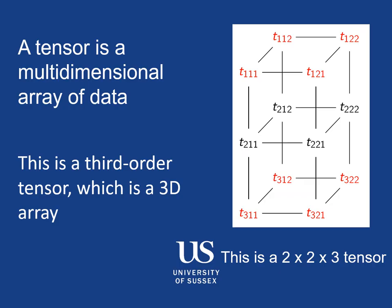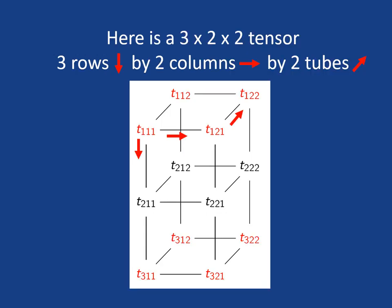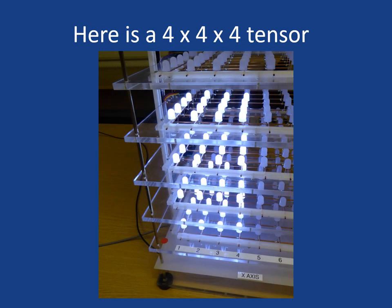And we can extend this into three dimensions to make a tensor. So this particular tensor has got three rows, two columns, and two in the other direction which is often called tubes. So this is a three row, two column, two tube tensor. A three by two by two tensor. And we can show that in LEDs as well. This is four by four by four LEDs lit. So it's a four by four by four tensor.